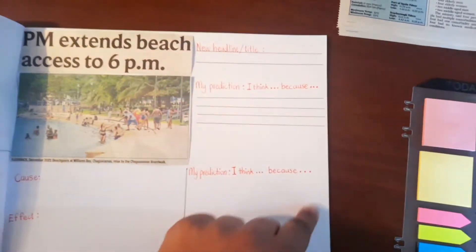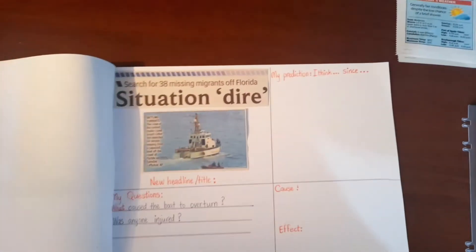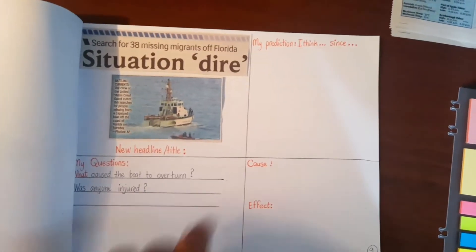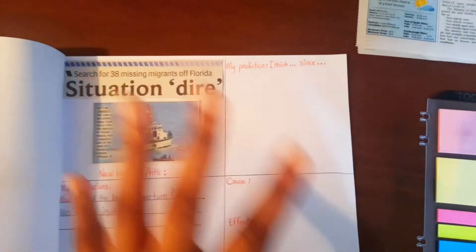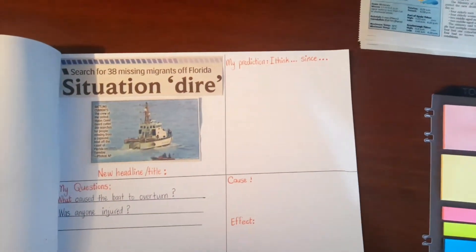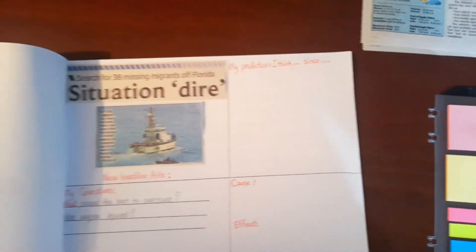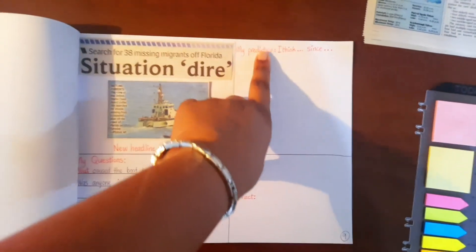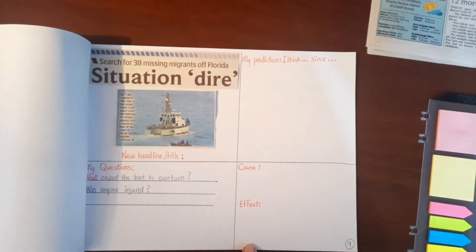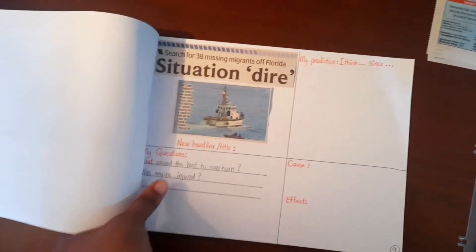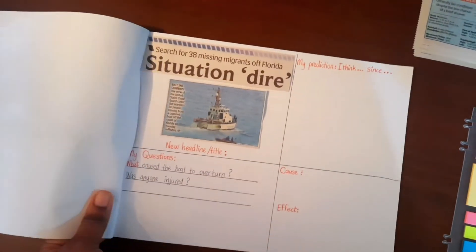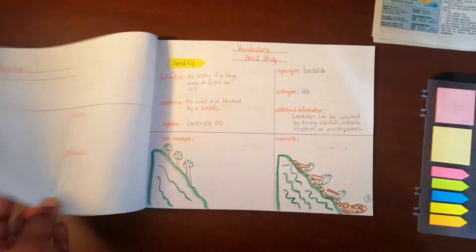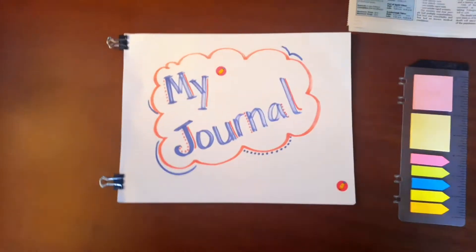In this article we used 'because.' In this one, we used 'since.' We also did more than one skill — in this example we had predictions, cause and effect, and we also practiced questioning as well. Let me show you some student samples.